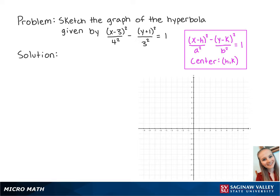Here we have the standard form of a hyperbola. For this problem, a equals 4 and will be horizontal since it is underneath the x. B equals 3 and will be vertical since it is underneath the y. And the center is at (3, -1).